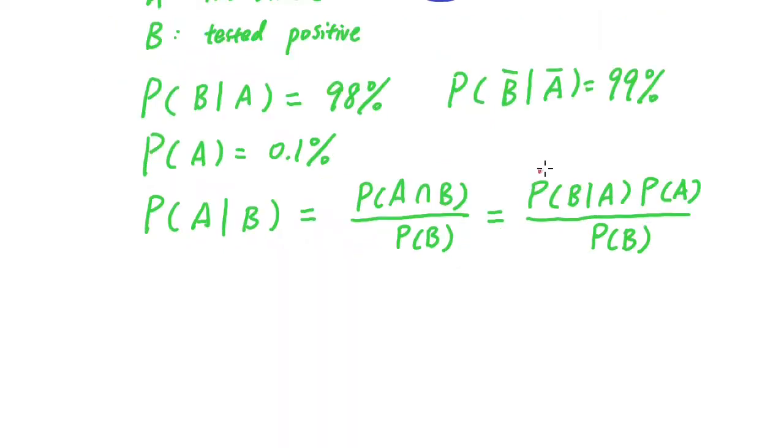So we have this number, which is 98 percent. We have this number, 0.1 percent. We don't have P(B). What is P(B)? P(B) is the probability that someone is tested positive.